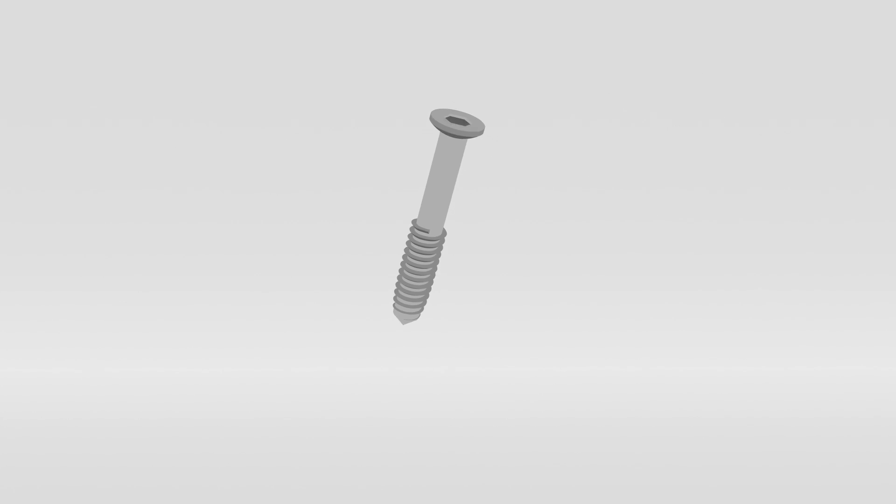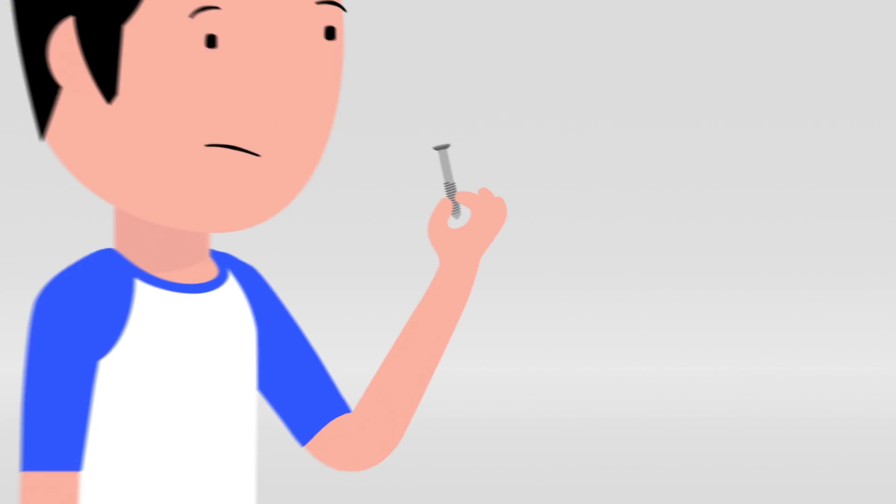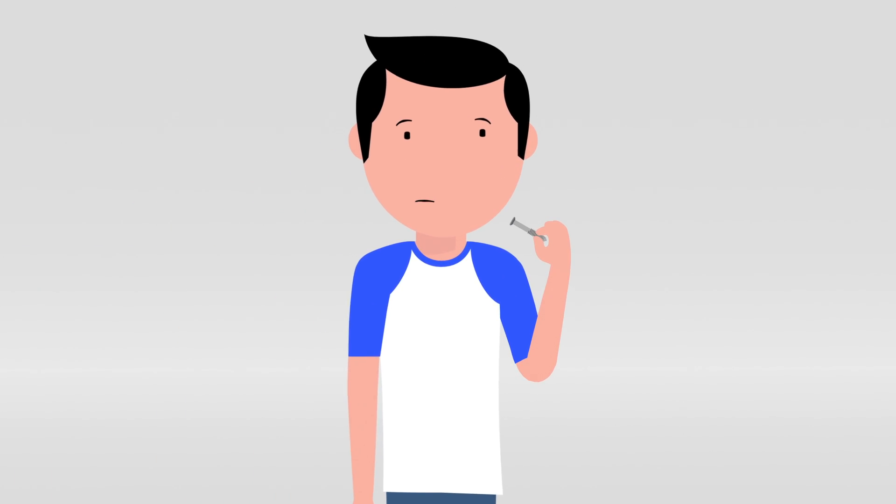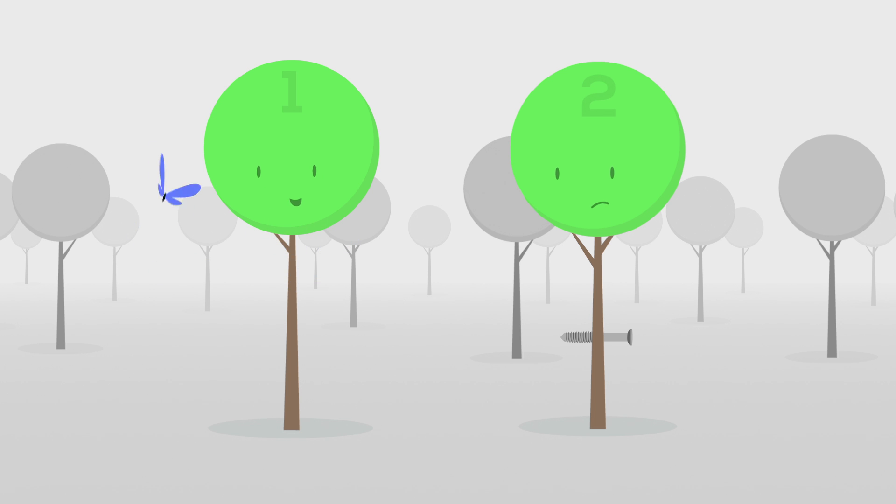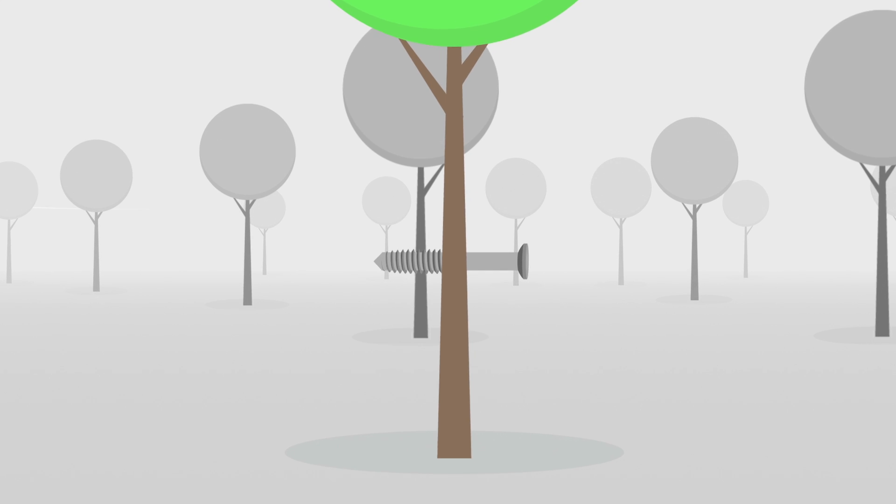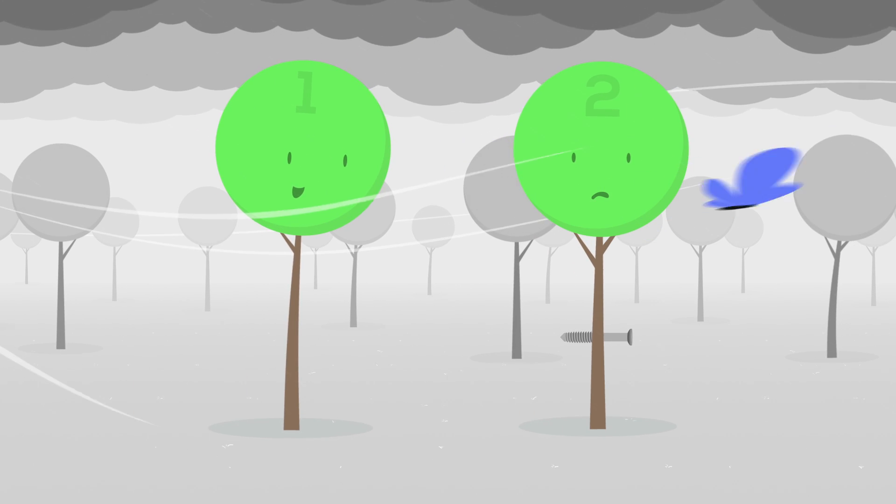Did you know that even small metal screws can actually affect the bone's ability to bend and flex? Let's see how this works. Take these two trees. The biomechanics of tree number one are as nature intended, but tree number two has a foreign object implanted straight through the trunk.